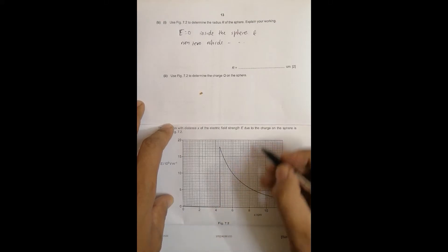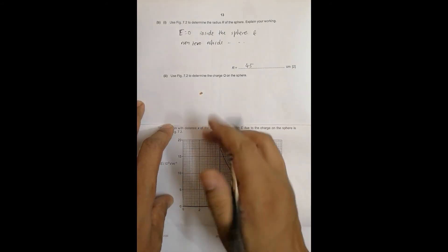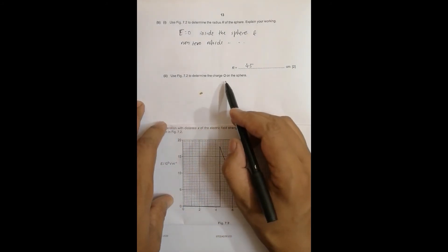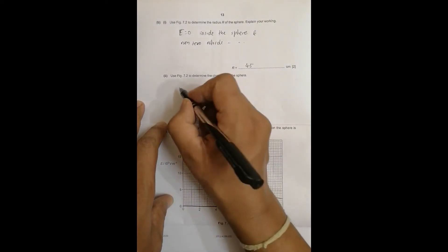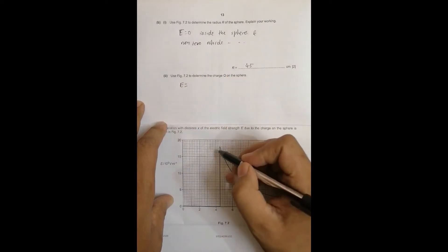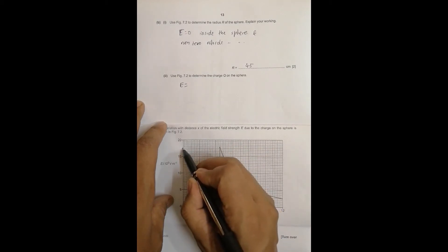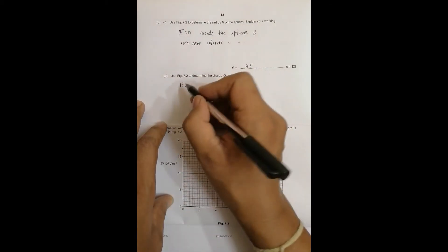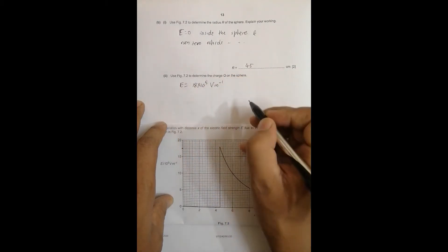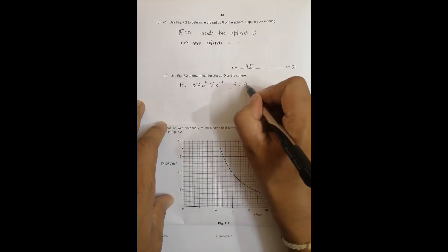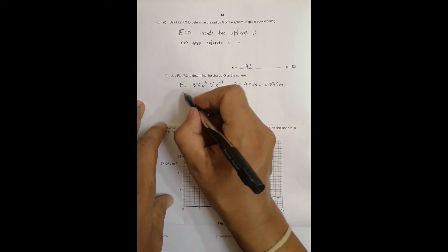Now use figure 7.2 to determine the charge Q on the sphere. So we have to find charge Q. This E at the very surface should be equal to, this is 17.5, middle of 20 and 15, and this should be 18, so it is 18 into 10 to the power 5 volt per meter and R is 4.5 centimeter equal to 0.045 meter.